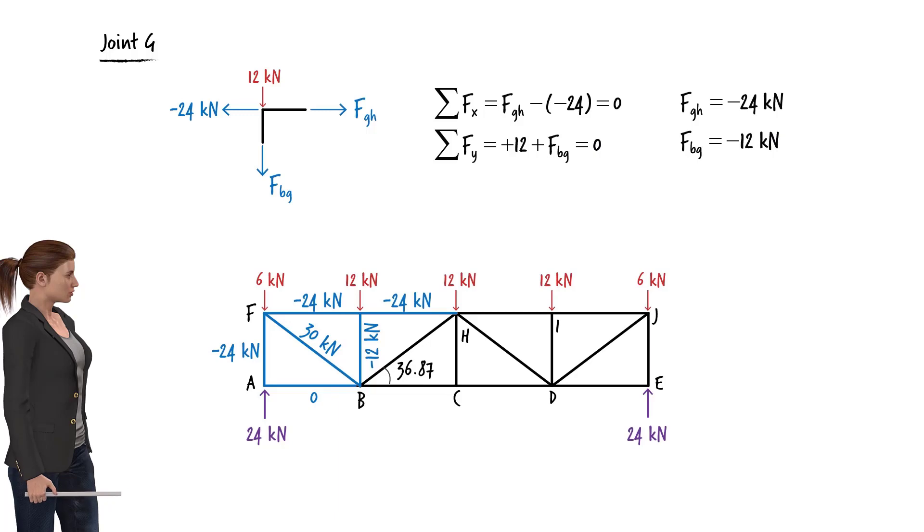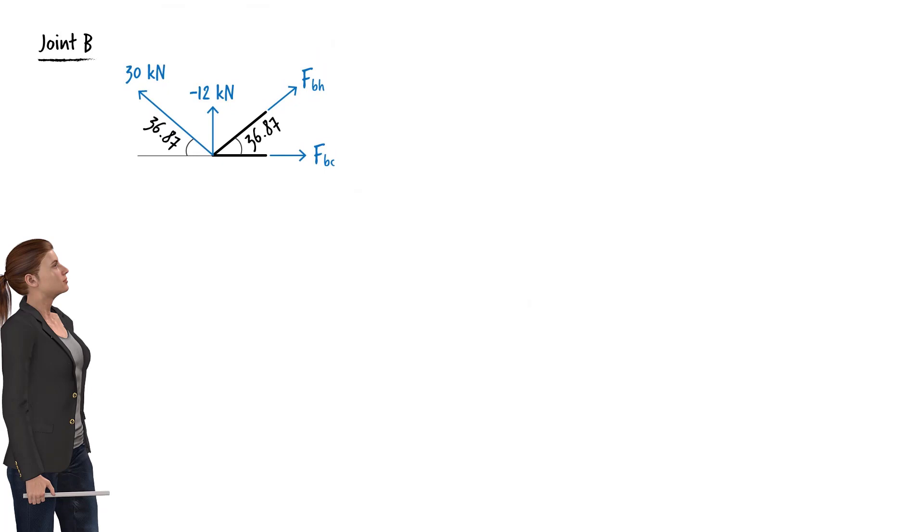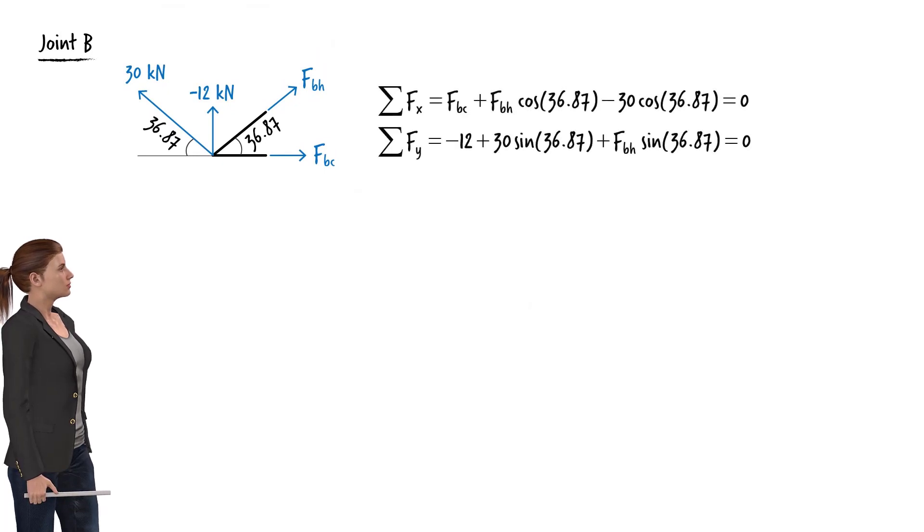Next, let's look at joint B. Here is its free body diagram. The equilibrium equations for the joint are written. Solving these equations for the unknown forces, we get the results shown.